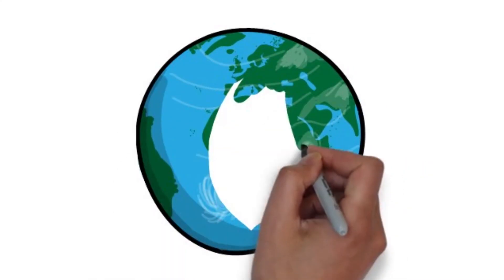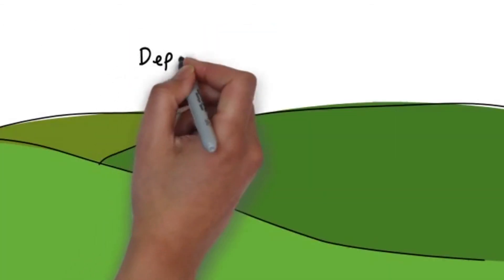Living things can be found almost anywhere. They often share the same home and depend on one another to survive.